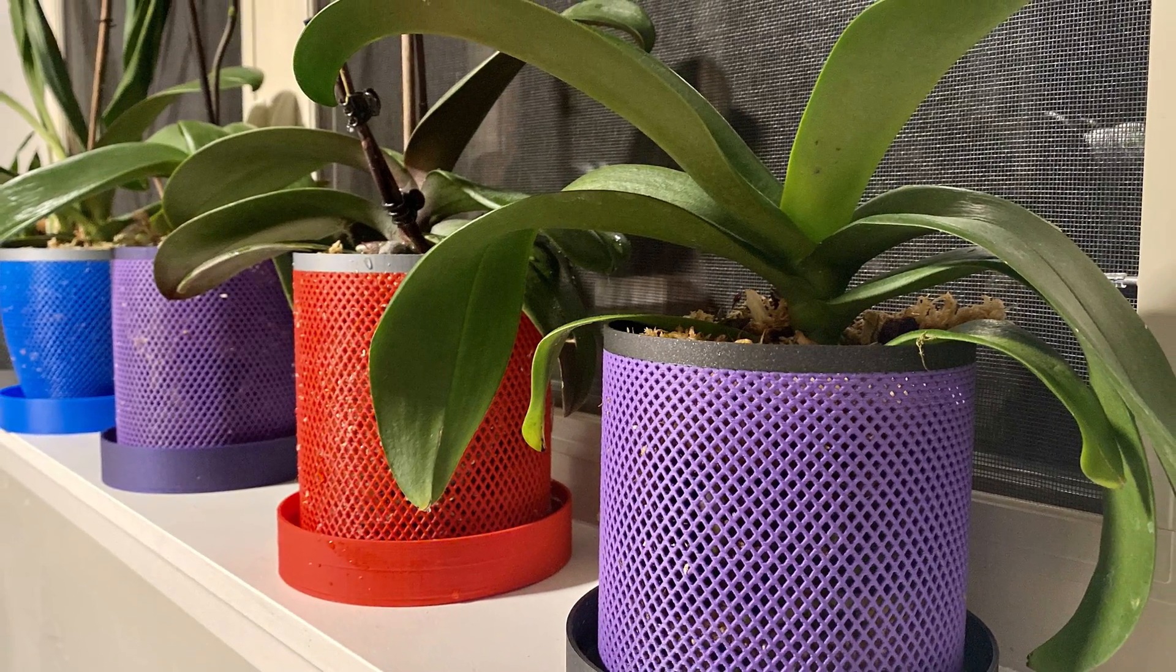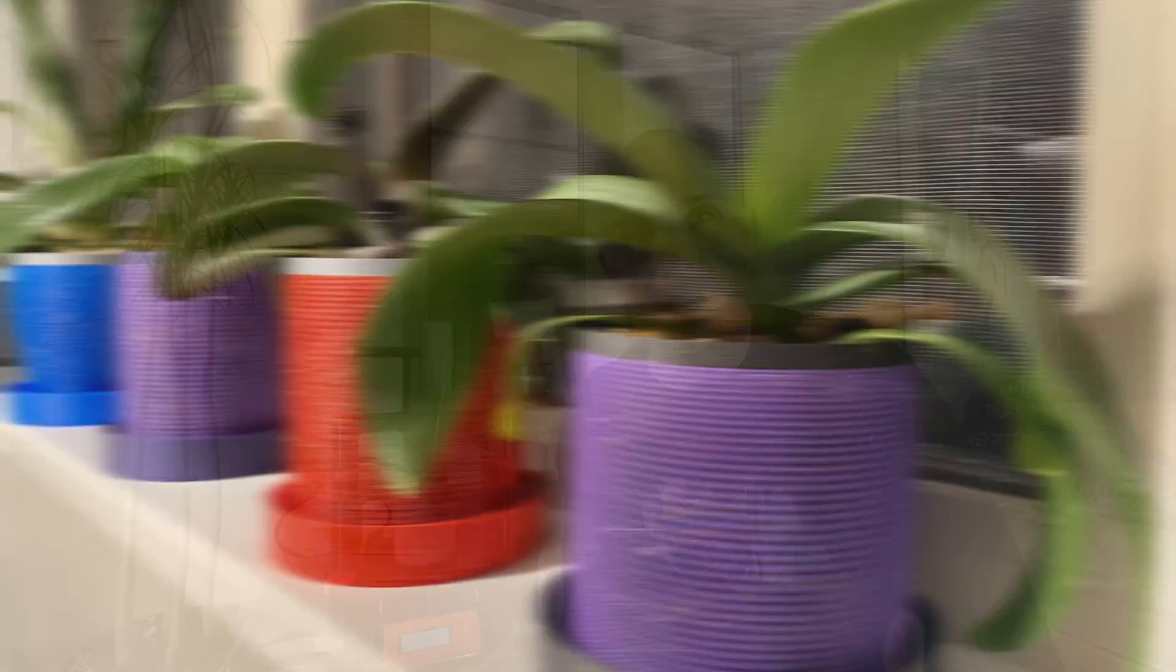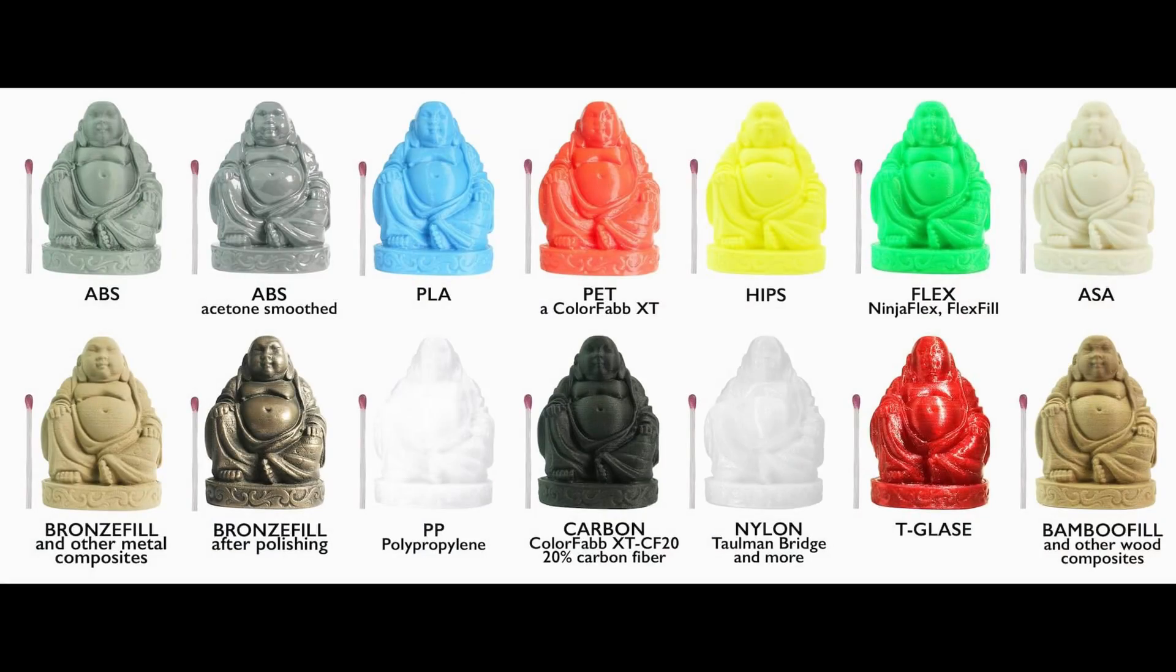I started off designing these what I think are pretty cool orchid pots. When I first started printing them I was using PLA, which is polylactic acid. It's cornstarch-based material, super easy to work with, one of the more common things in 3D printing. You can do a bunch of different cool materials like wood infills, metal infills, carbon fiber, things like that.